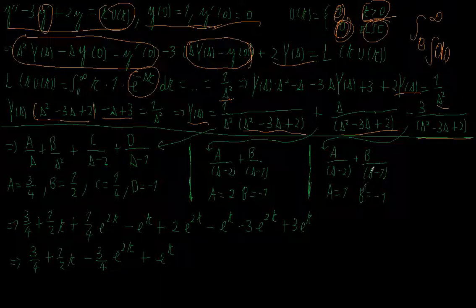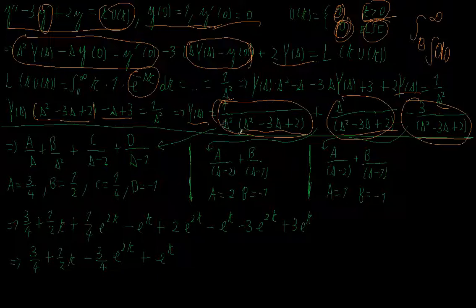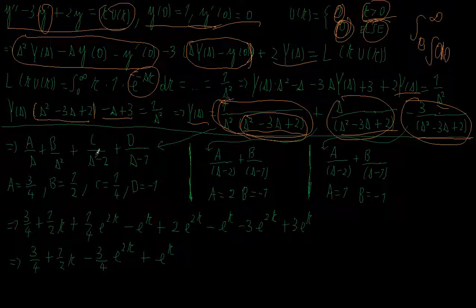I can do a partial fraction decomposition for each part. For the first part, 1 over (s squared times (s squared minus 3s plus 2)), I factor s squared minus 3s plus 2 as (s minus 2)(s minus 1), and write it as A over s plus B over s squared plus C over (s minus 2) plus D over (s minus 1). This gives A equals 3/4, B equals 1/2, C equals 1/4, and D equals minus 1.